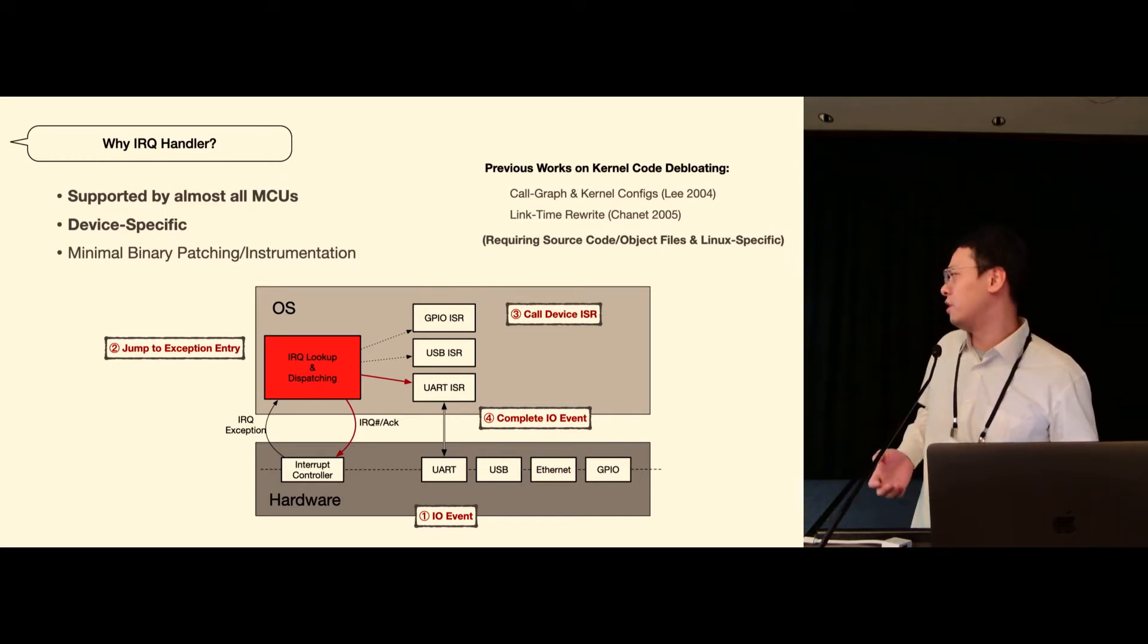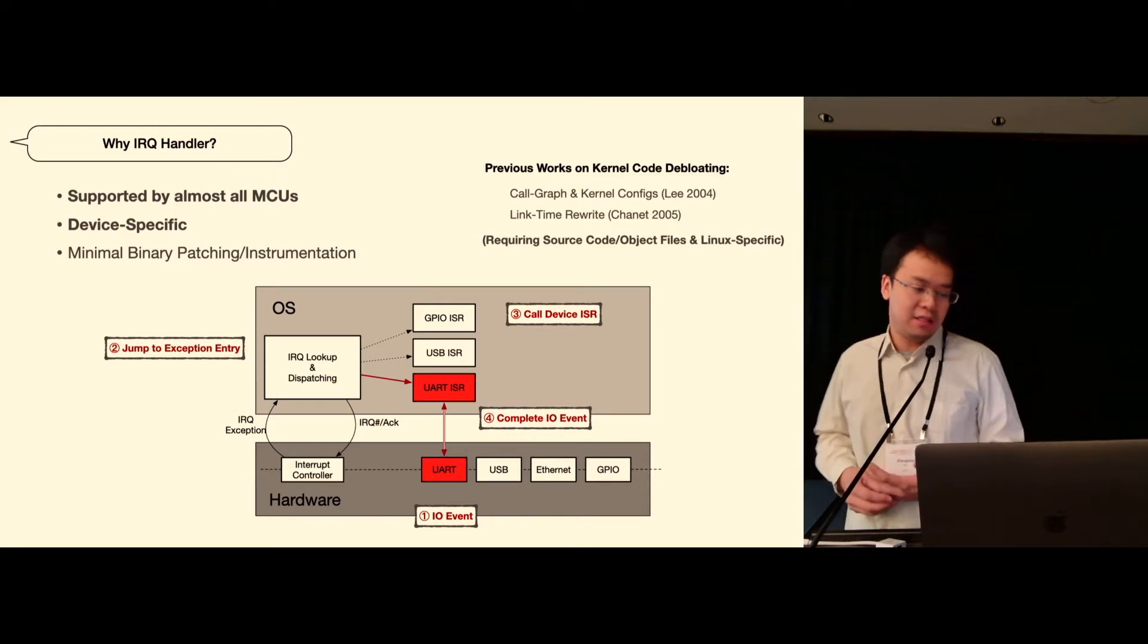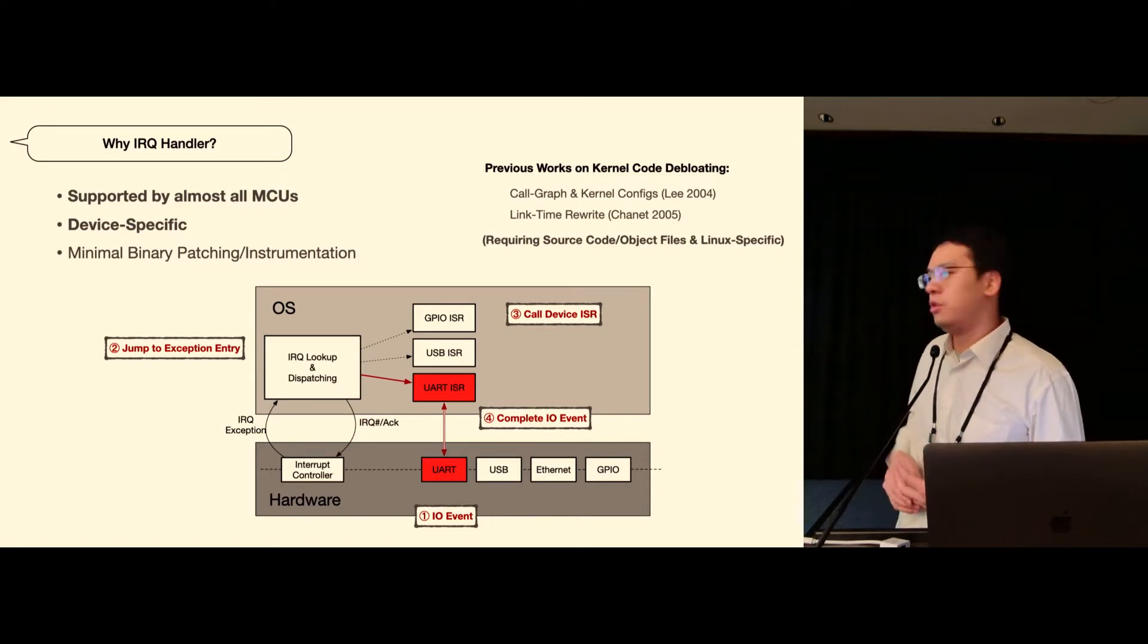Then the CPU would jump to an exception entry point where it can read the hardware IRQ number from the interrupt controller and based on that it can dispatch to the specific device interrupt handler, which in this case will communicate directly with the serial device and eventually complete the IO event.